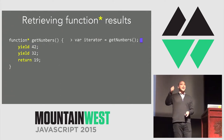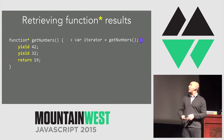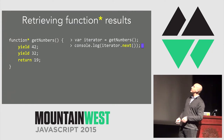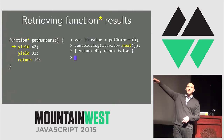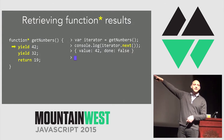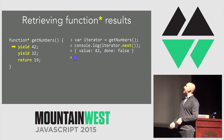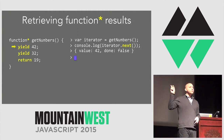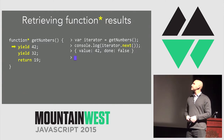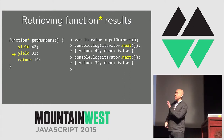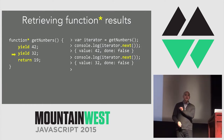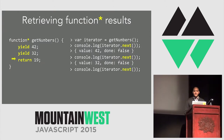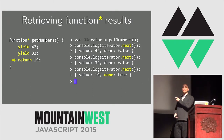To consume data from a generator, you first request what's called an iterator from the function, then call next. The code begins and pauses at the yield expression, and you get out a tuple with the value and a Boolean telling us whether we're done. You call next again, stop at the next yield point, get out 32, and find we're still not done. You call next one final time, get out 19, and a Boolean telling us we're done.